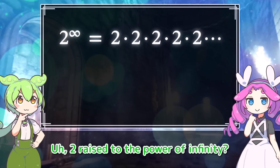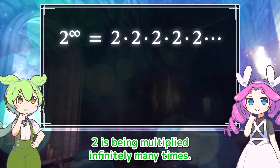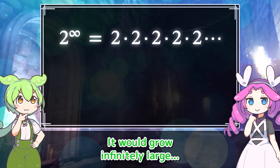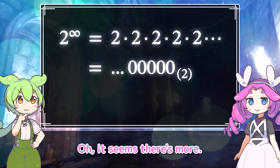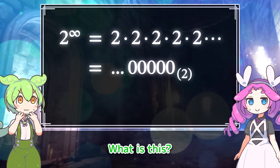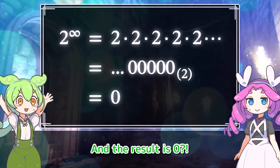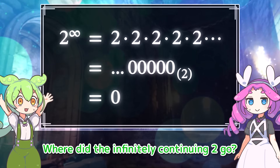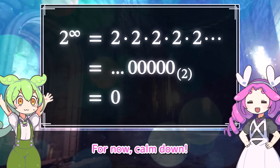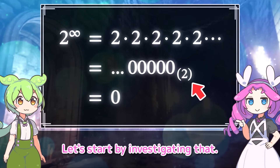2 raised to the power of infinity? 2 is being multiplied infinitely many times — it would grow infinitely large. It's a suspicious-looking expression. Oh, it seems there's more. I see. What is this? Zeros are going on infinitely, and the result is 0? I don't get it at all. Where did the infinitely continuing 2 go? For now, calm down. Oh yes! This 2 seems to represent binary notation. Let's start by investigating that.